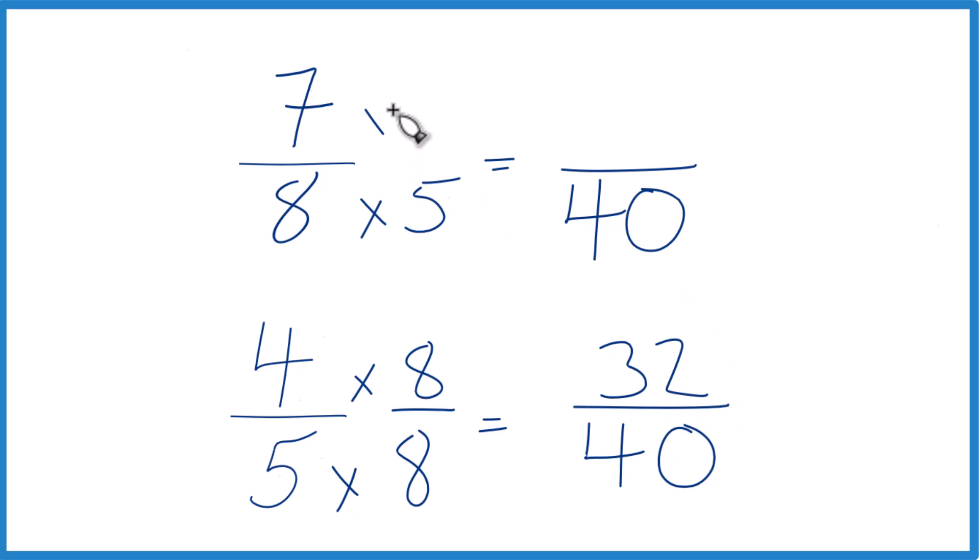Up here, let's multiply our numerator by 5, so we have 5 over 5. 7 times 5, that's 35.